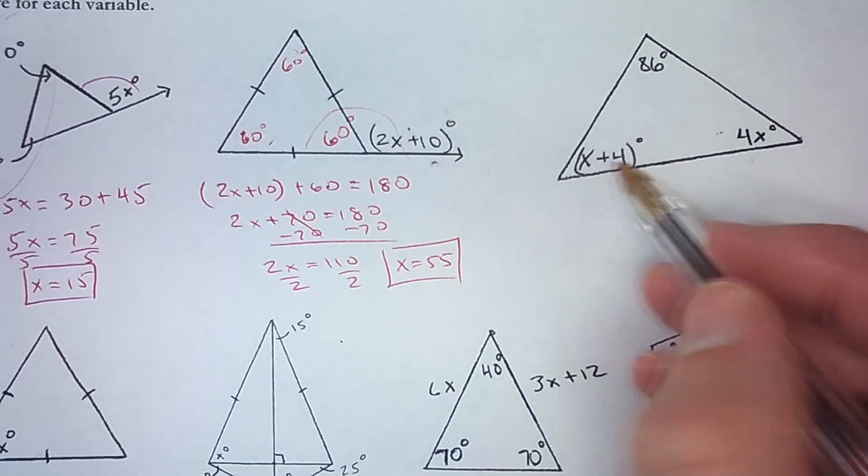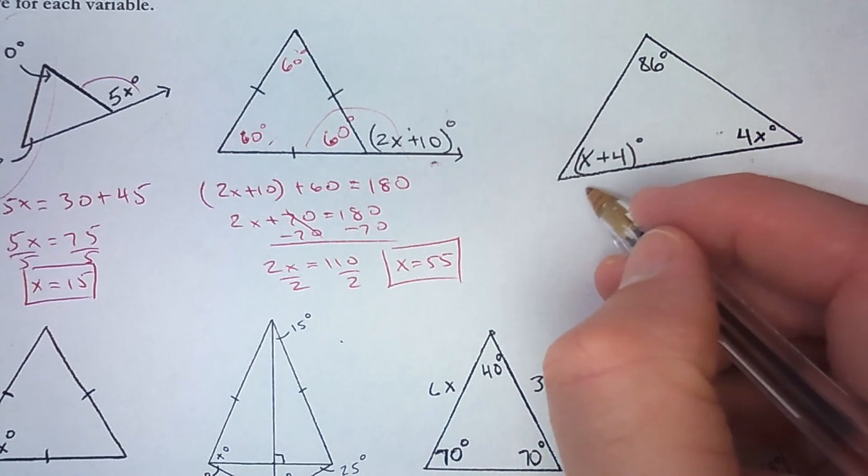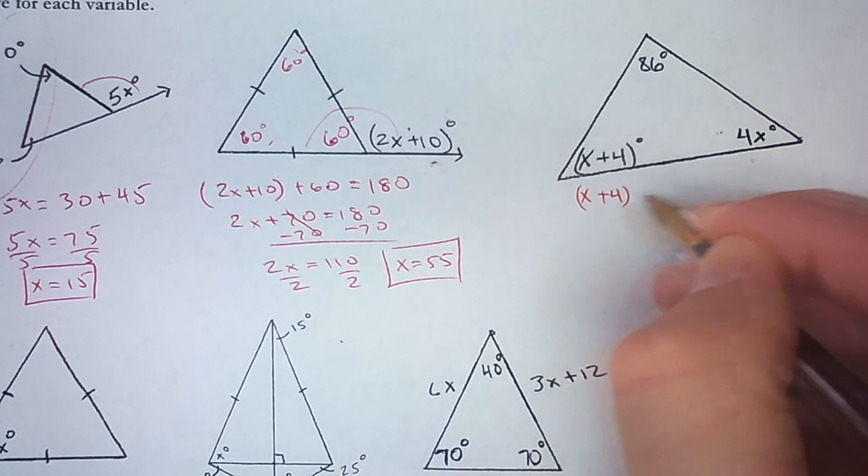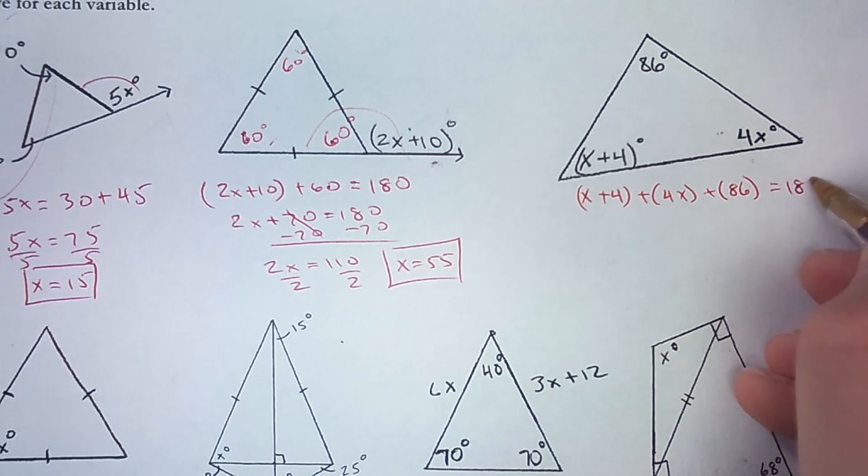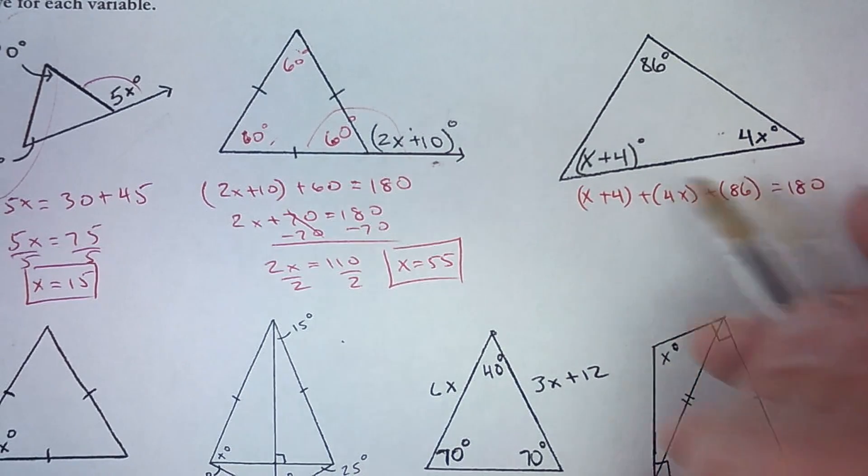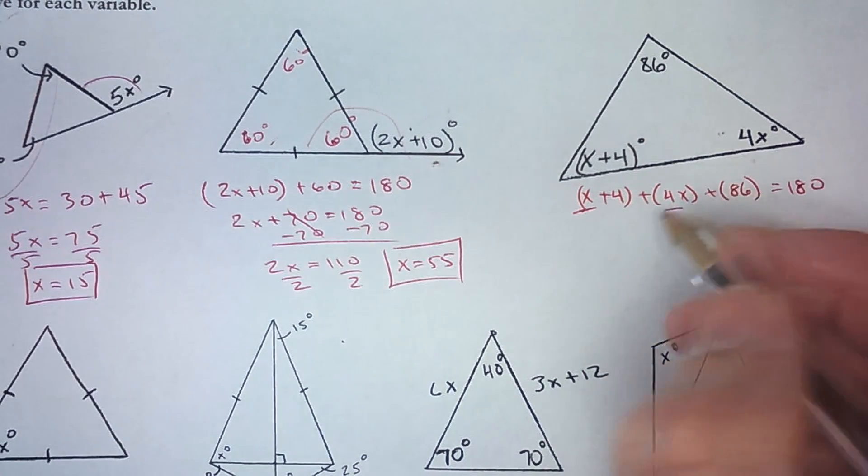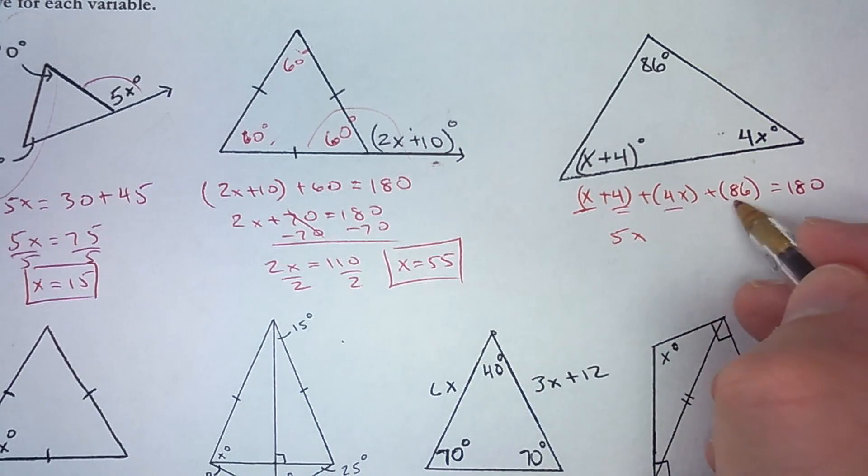A triangle always adds up to 180. So x plus 44 plus 4x plus 86 is 180. So the three angles of the triangle add up to 180. So I've got some like terms here. x and 4x makes 5x. 4 and 86 makes 90.